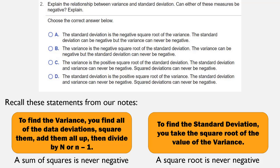So, the correct answer here is choice D. The standard deviation is the positive square root of the variance. The standard deviation and variance can never be negative. Squared deviations can never be negative. And that's your answer.